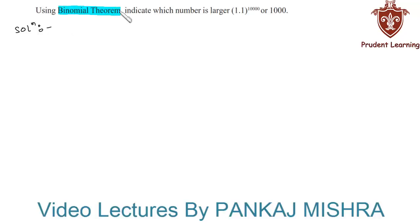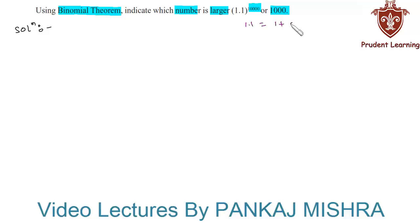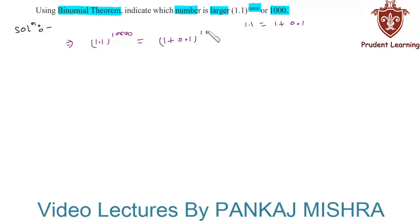Using the Binomial Theorem, indicate which number is larger: 1.1 raised to 10,000 or 1000. To use the Binomial Theorem, we write 1.1 as 1 plus 0.1. This implies 1.1 raised to 10,000 is equal to (1 + 0.1) raised to 10,000. By using the Binomial Theorem, we can expand this expression.